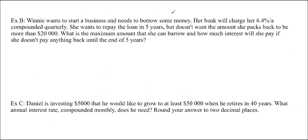Okay, we're just going to do two more examples. You can see these are pretty straightforward. Winnie wants to start a business and needs to borrow some money. Her bank will charge her 6.4% per annum compounded quarterly. So, again, it's really important to figure out when it is compounded, or how often it is compounded. That's a really important detail.